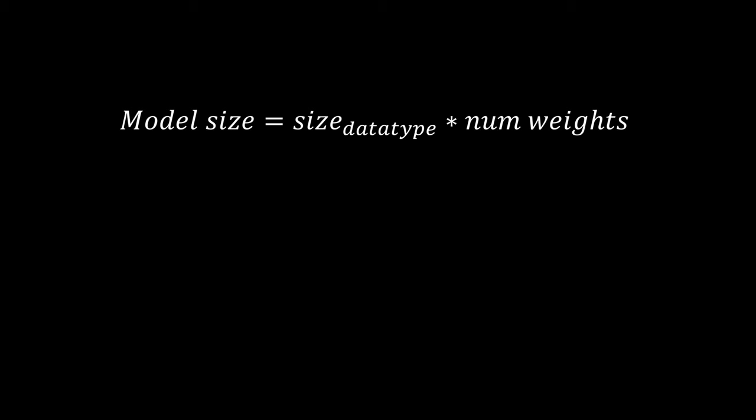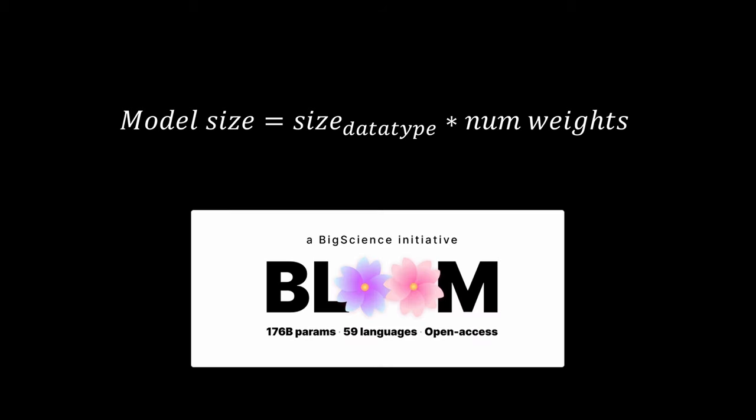For training, however, you require even more than that, because you additionally need to store each weight's gradients and learning rates. An example, Bloom is a 176 billion parameter model, and it corresponds to roughly 350 gigabytes of memory. For inference, this means you need several large GPUs to run this model.